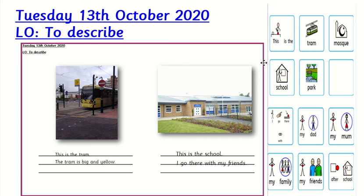I've only got one sheet up here but I've given you four different pictures. On your four different pictures, they're different places around our local area. Your job today is to describe what you can see and where they are. We have given you some sentence starters and some ideas to help with writing your sentences.